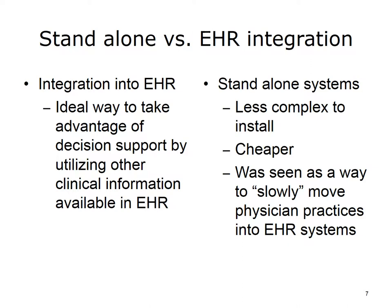There are two main types of e-Prescribing systems: those that are standalone, or those that are integrated into an electronic health record. Those that are standalone are typically less complex to install, typically cost less, and originally they were seen as a way to slowly move physicians into full EHR systems. E-Prescription systems that are part of the electronic health records systems are really the ideal way to take advantage of the decision support by utilizing other clinical information available in the electronic health record for effective, safe, and high-quality prescribing.